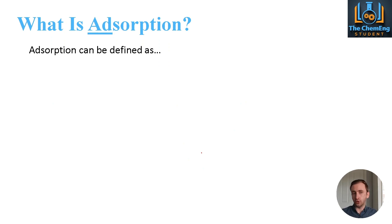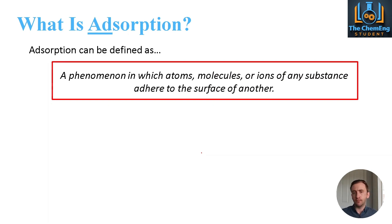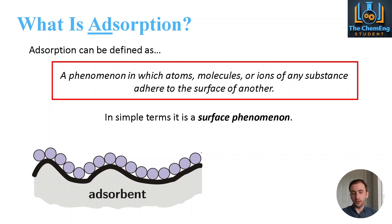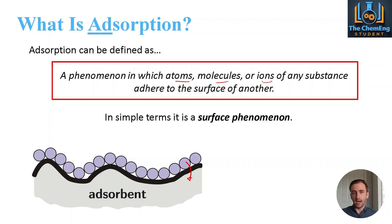Now if we consider adsorption, it follows a similar principle, but instead of the atoms, molecules, or ions being able to enter the bulk material, they can only adhere to the surface. We tend to refer to it as a surface phenomenon — the particular molecules cannot actually enter inside the material. What you have is surface adhesion to the particles or the solid material. This can be atoms, molecules, or ions of any substance, and that is the key physical difference between absorption and adsorption.